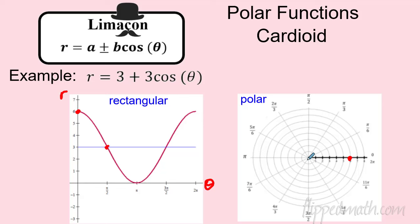At π/2, r equals 3. At π, r equals 0 — that's a great point, it's in the pi direction with r = 0. At 3π/2, r is back to 3, and at 2π it's back to 6. Those five special points give us a rough idea, but let's look at the actual graph.